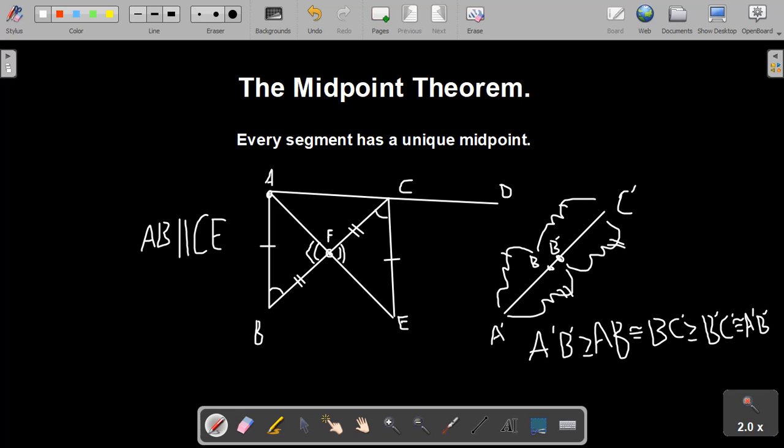Thus, all these inequalities have to be congruences, because A prime, B prime is obviously congruent to A prime, B prime. So that means that A prime, B prime is congruent to the segment A prime, B prime. But since they're both in the same ray, then by uniqueness of segment translation, that means that B equals B prime.